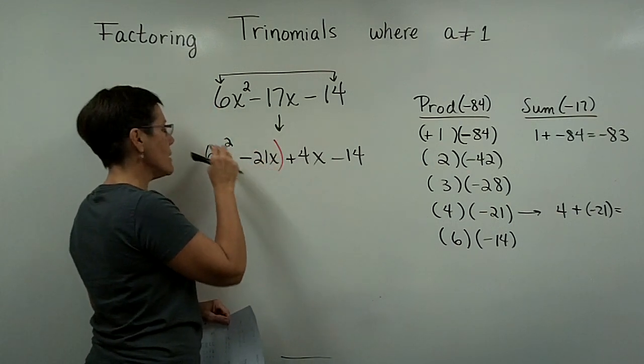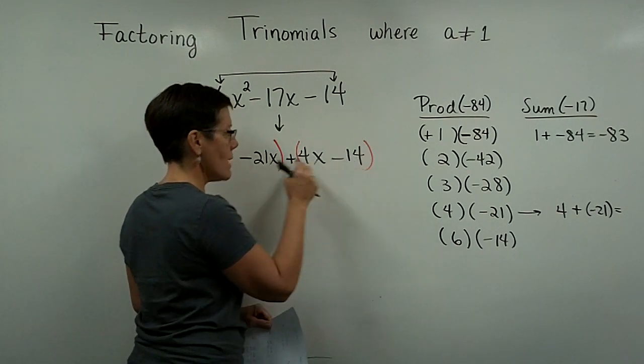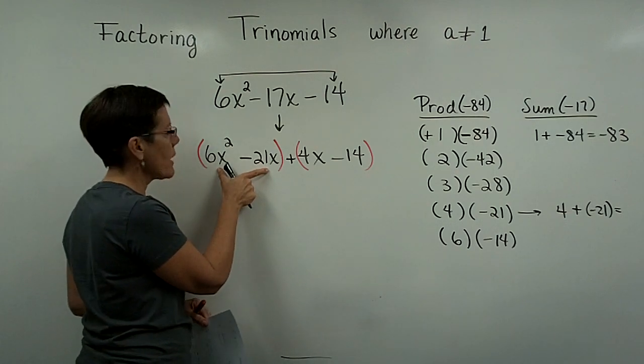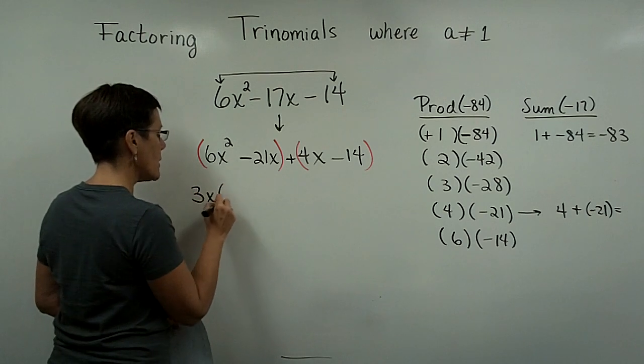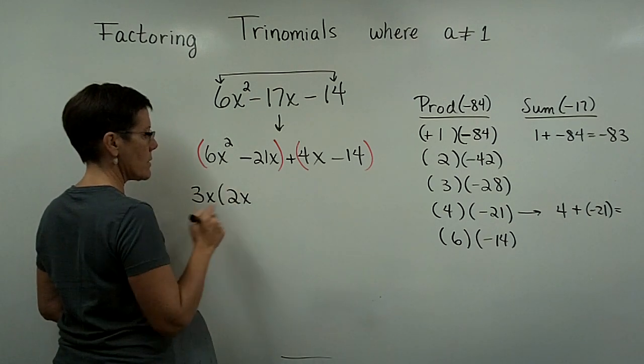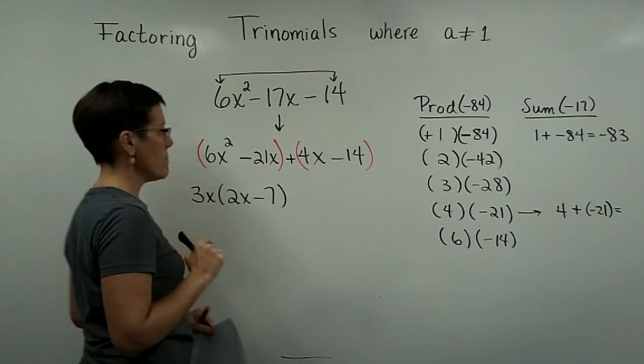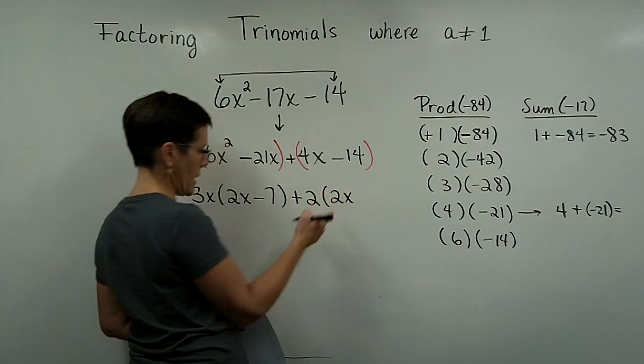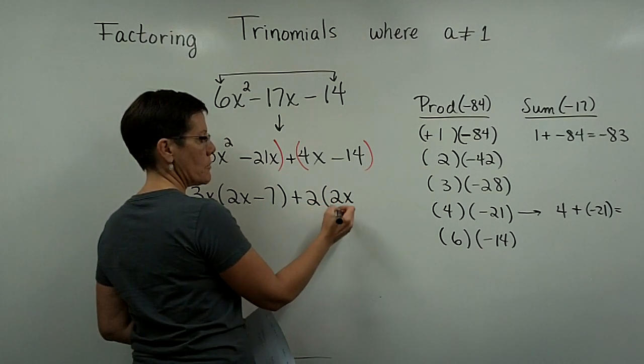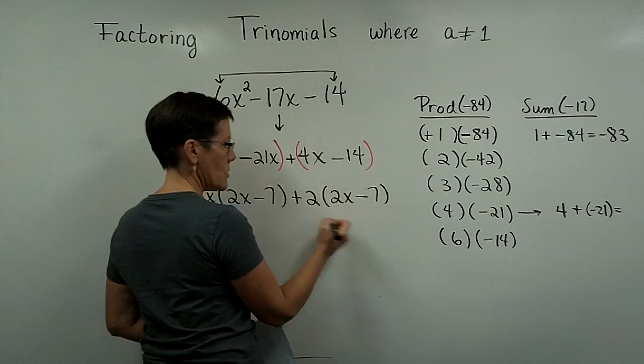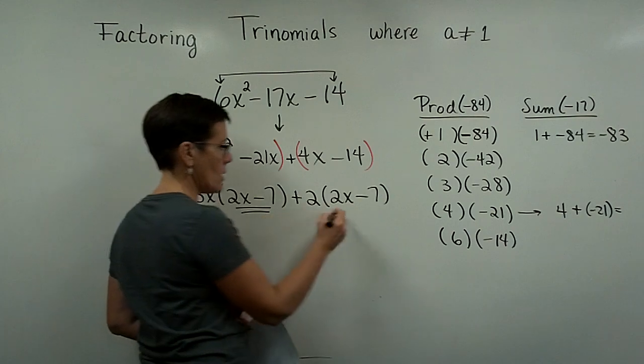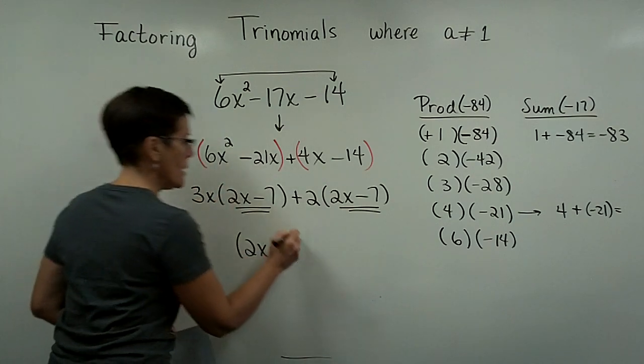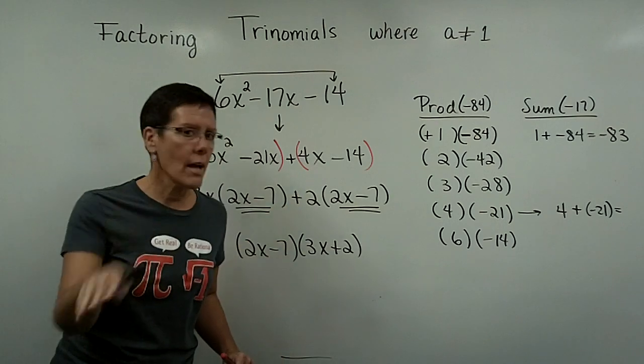Here I'll just pull the greatest common factor out of a 3x and then I need a 2x here because that product is 6x squared and then a minus 7 because that product is a minus 21x. The greatest common factor here is a 2. So I'm going to have this in its factored form is 2x minus 7 times 3x plus 2. Guaranteed works every time.